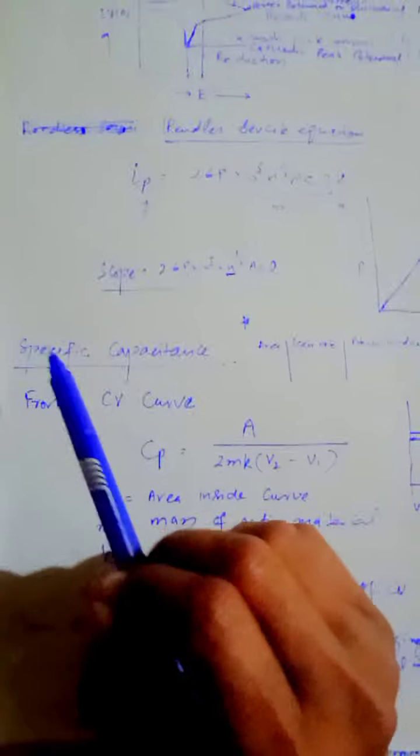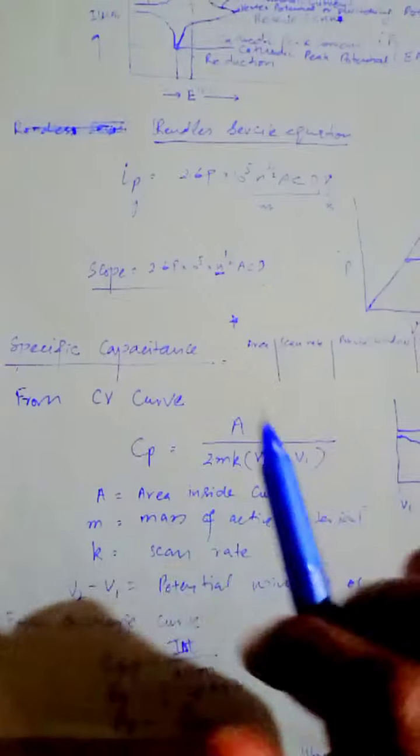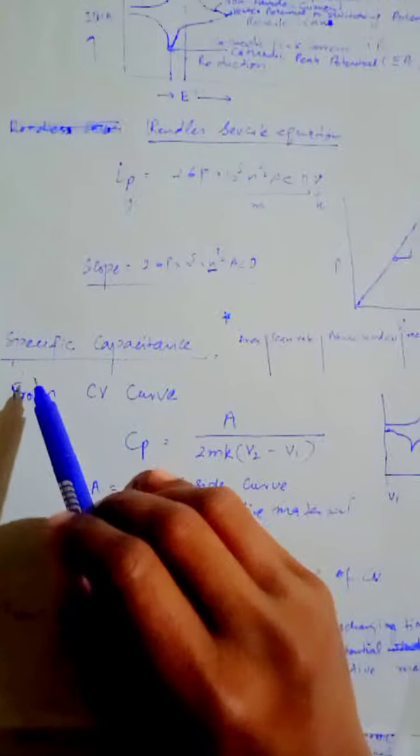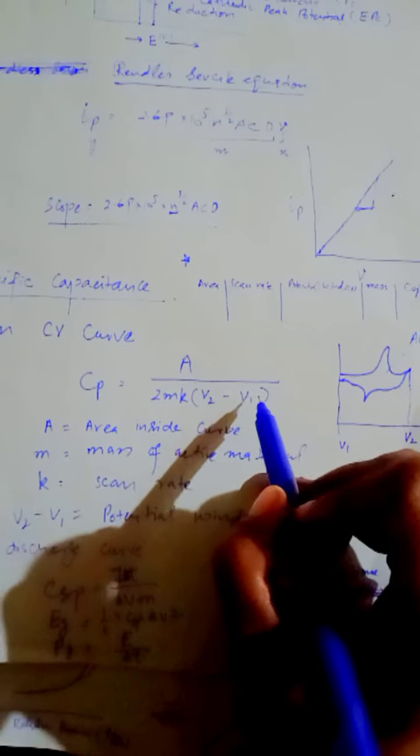اس کے بعد ہمارا جو main topic ہے وہ specific capacitance ہے۔ Specific capacitance کو ہم CV کے graph سے بھی find کر سکتے ہیں اور galvanostatic charge-discharge یعنی GCD technique سے بھی find کر سکتے ہیں۔ چونکہ ہم نے CV discuss کیا تھا، تو CV کے curve کے لیے specific capacitance کا formula یہ ہے: Cs = A / (2 × m × k × (v2 - v1))۔